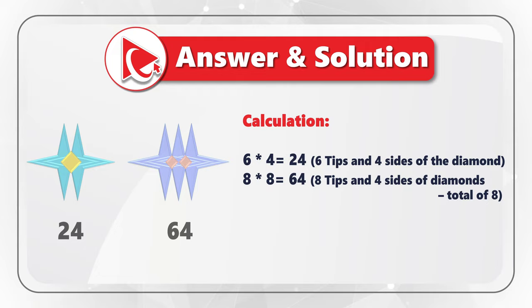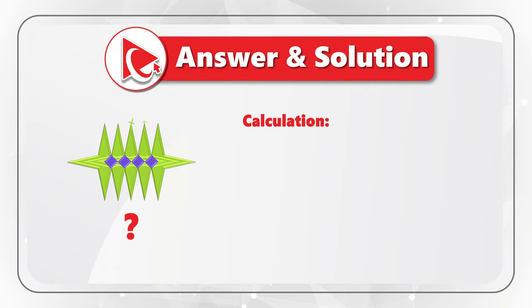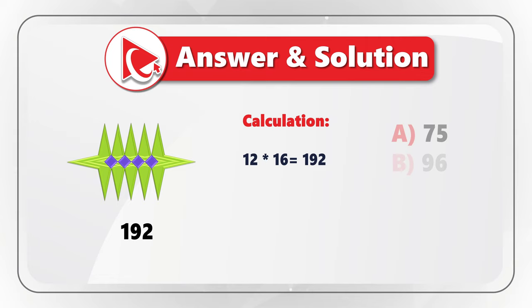Let's do the calculations for the missing number. We have 12 tips — one, two, three, four, five, six, seven, eight, nine, ten, eleven, twelve — which are represented by 16 sides. Twelve multiplied by 16 equals 192, which is represented by choice D. So the correct answer here is choice D, 192.